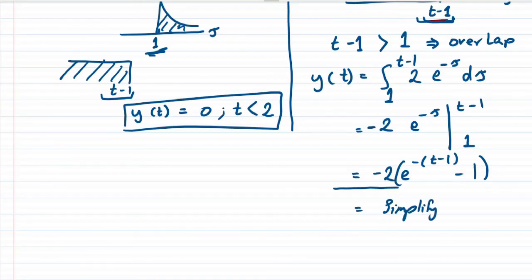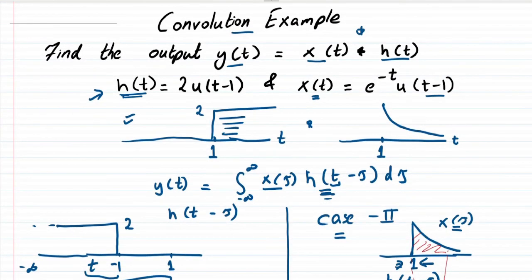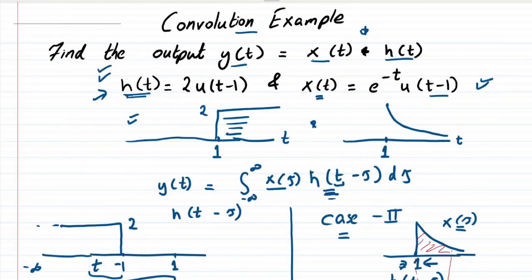This is the closed form expression that we desire. The convolution of x(t) and the impulse response is simply a case statement for y(t).